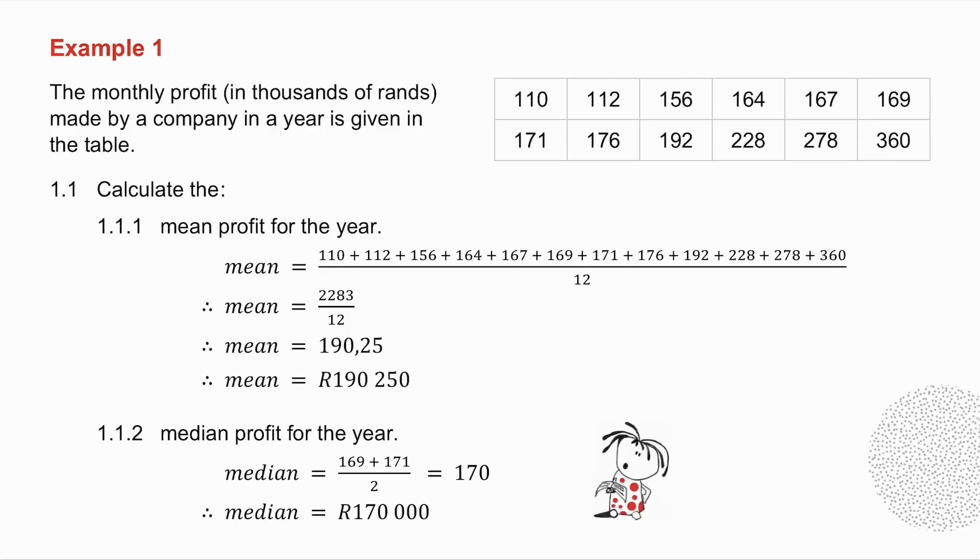I have 12 values, so the median lies between the 6th and the 7th value, so I add those two together and divide by 2. Do not forget again to multiply by a thousand.